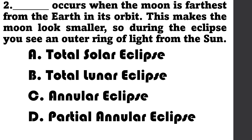Number 2: Blank occurs when the moon is the farthest from the earth in its orbit. This makes the moon look smaller, so during the eclipse you see an outer ring of light from the sun. A. Total solar eclipse, B. Total lunar eclipse, C. Annular eclipse, D. Partial annular eclipse.